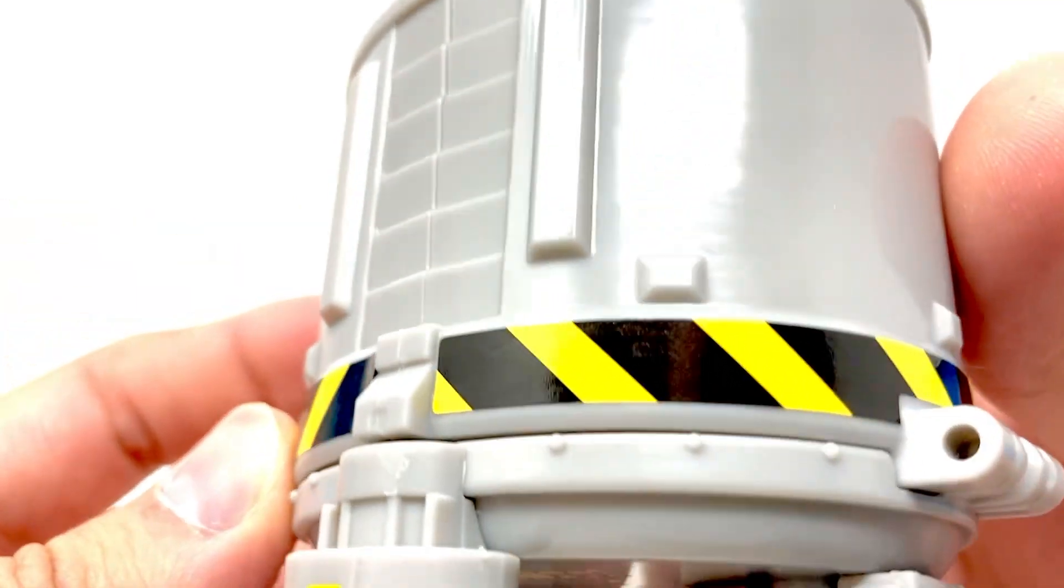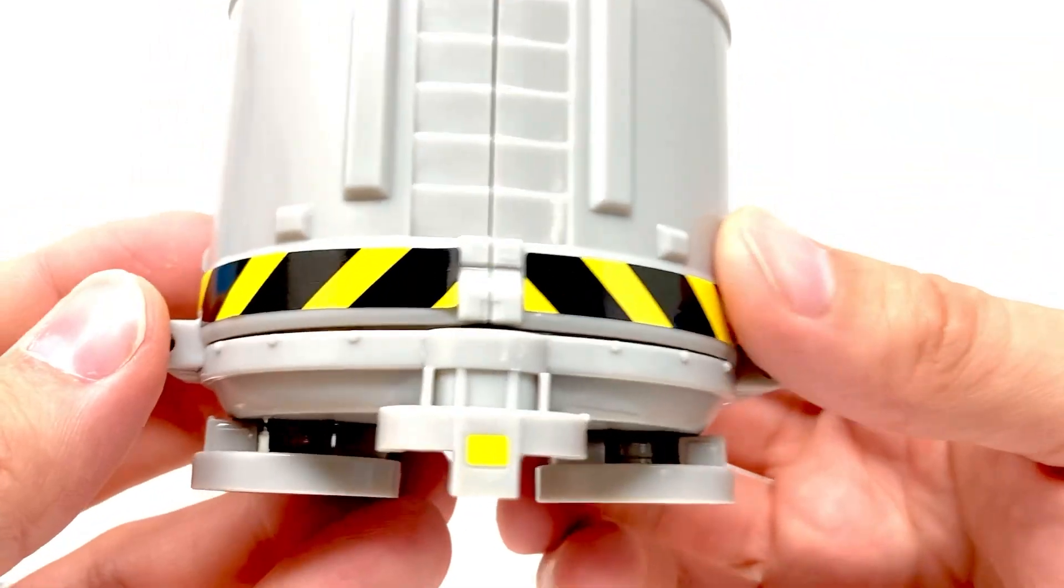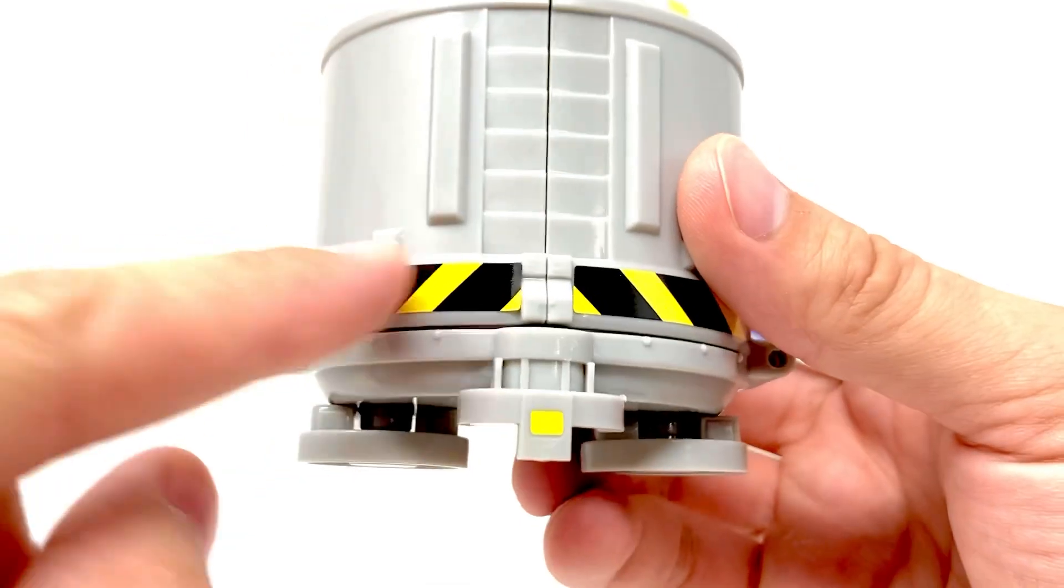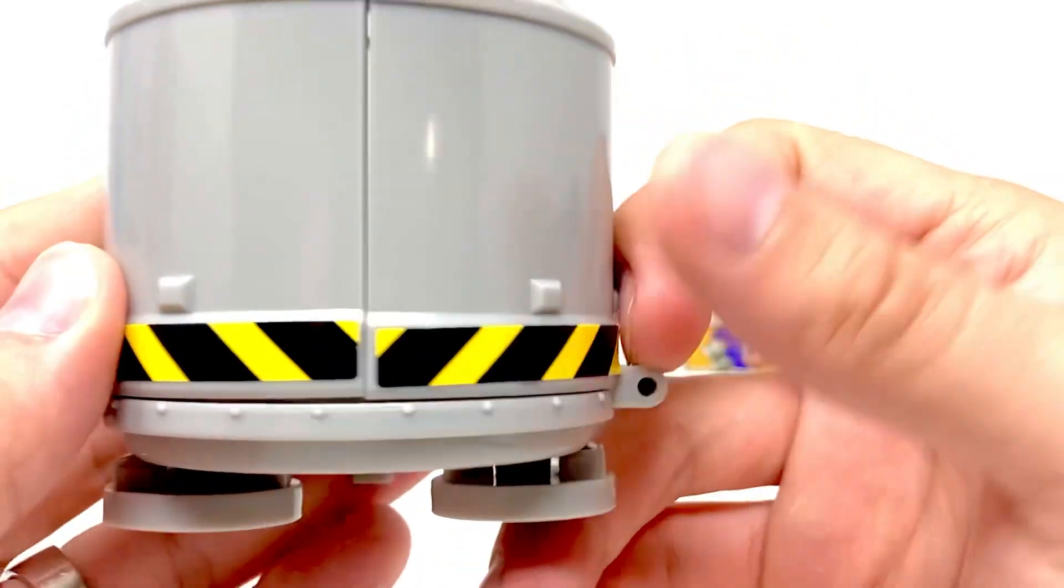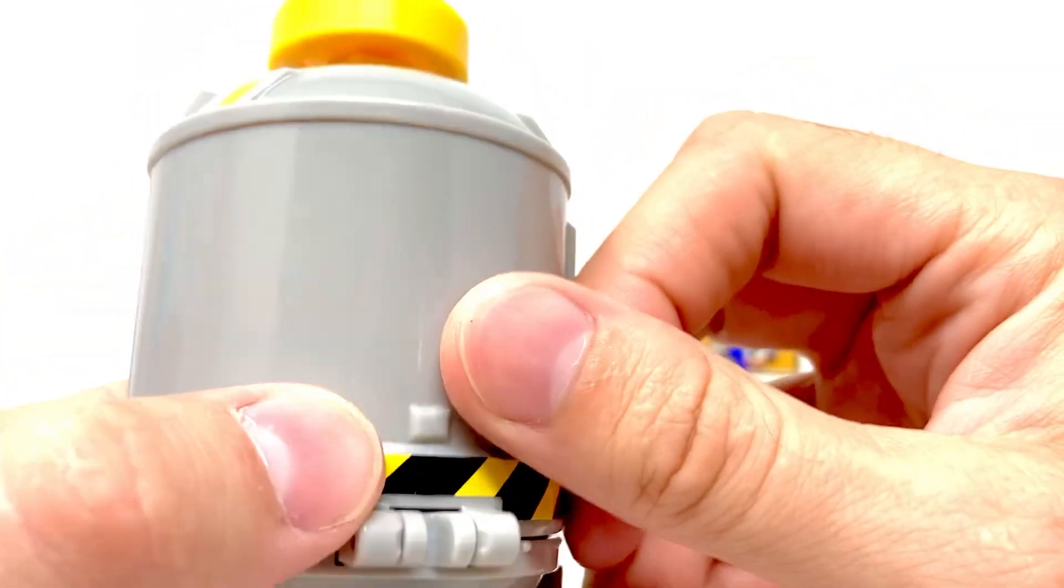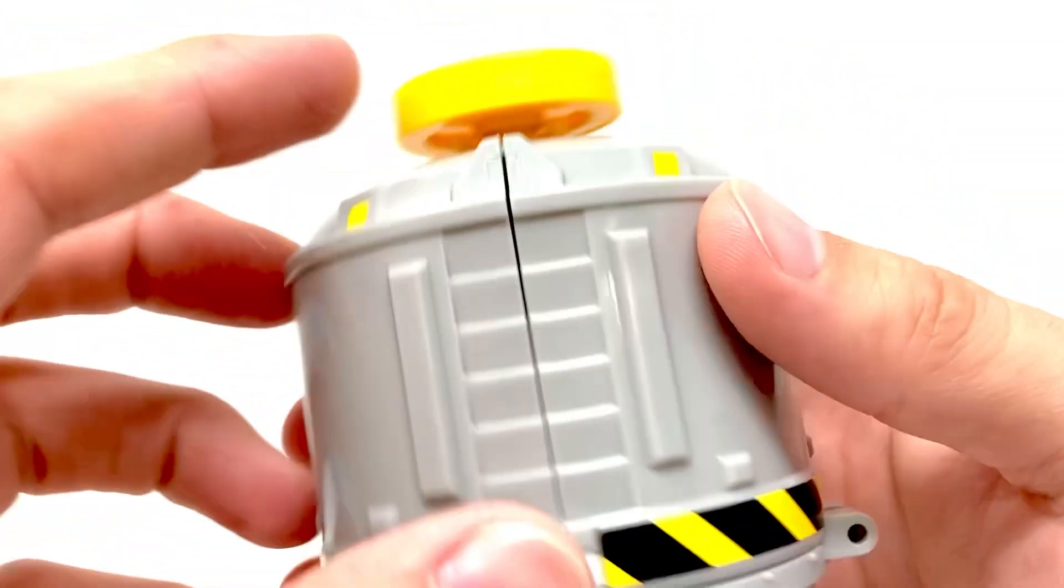Something I'm actually kind of disappointed in, and I can't believe Jakks actually did this, is that all around this is a sticker. I hate stickers. Stickers suck because eventually the glue on stickers will go bad and it will fall off probably or get gross.